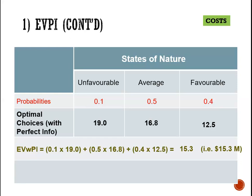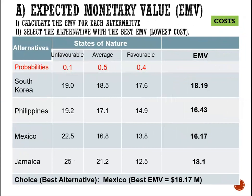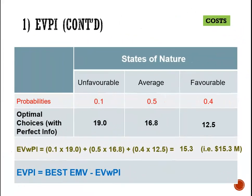So we are saying that with perfect information, our expected cost could be as low as 15.3 million. Now if you recall, the best EMV that we had identified before was 16.17 million, and we had identified that as the lowest expected cost. So now we are saying we can actually reduce our expected cost from 16.17 million to 15.3 million with perfect information. As a result, the value of this perfect information to us is the difference between these two figures. So the EVPI is equal to 16.17 million minus 15.3 million, which works out to 0.87 million. So the most that we would be willing to pay for perfect information in this scenario is 0.87 million or $870,000.